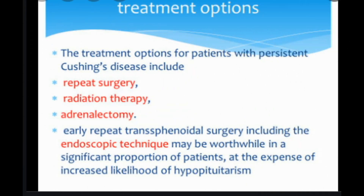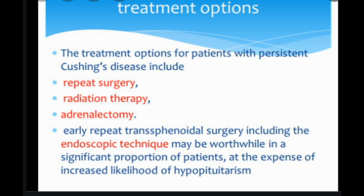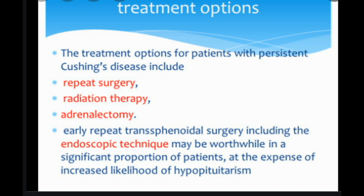Treatment of Cushing's syndrome depends on the underlying cause of excess cortisol, but may include surgery, radiation, chemotherapy, or cortisol-inhibiting drugs. If the cause is iatrogenic, from long-term use of glucocorticoid hormones to treat another disorder, the physician will gradually reduce the dose to the lowest adequate level, and the dose may be given on alternate days to lessen side effects.